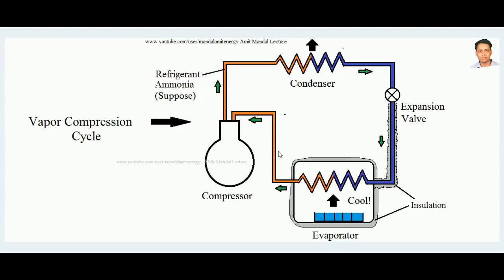I believe you all know how the vapor compression cycle works, but I will refresh you. The vapor compression cycle consists of four main components: the compressor, the condenser, the expansion valve, and the evaporator. The job of the compressor is to compress the refrigerant. Suppose ammonia is used as the refrigerant — the compressor compresses it and sends it to the condenser.